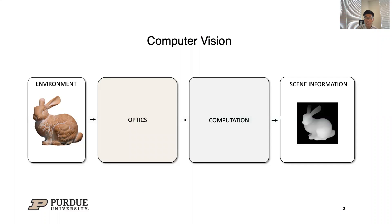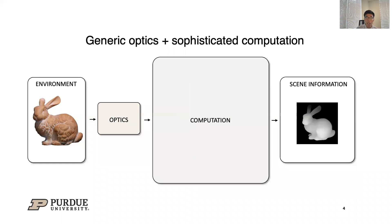In a computer vision system, the optics transform light rays emitted from the environment into digital signals. The signals are then manipulated electronically to recover the desired scene information. Nowadays, people often use generic optics such as commercial cameras and build sophisticated computational models like neural networks to do computer vision.